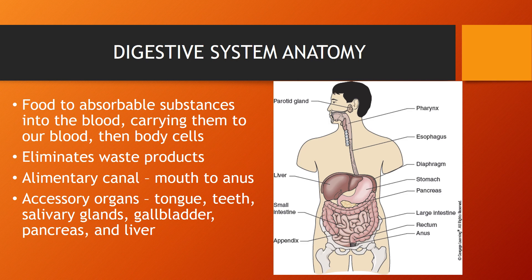Now let's look at the digestive system and its anatomy. The digestive system is responsible for changing the food we eat into absorbable substances that will move into our blood to be carried to the cells within our body. It basically gives our cells energy based on the breakdown of food into substances that will be permeable to our bloodstream. It also eliminates waste products from the body.